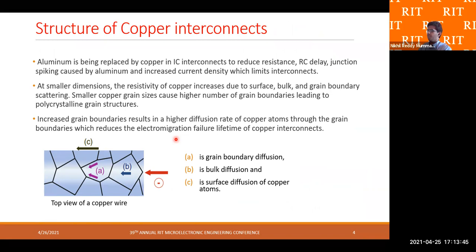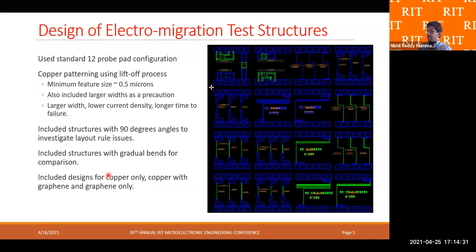In modern integrated circuits, copper has replaced aluminum as it provides up to five times greater breakdown current density compared to aluminum. It also reduces RC delays and prevents junction spiking. However, as a trade-off, copper cannot be dry-etched and needs to be wet-etched, or processed using lift-off or CMP in order to pattern it. Copper also tends to have a polycrystalline grain structure at smaller nodes, causing a very high number of grain boundaries, which increases resistivity and diffusion of copper atoms along the surface, grain boundaries, and bulk of the copper.